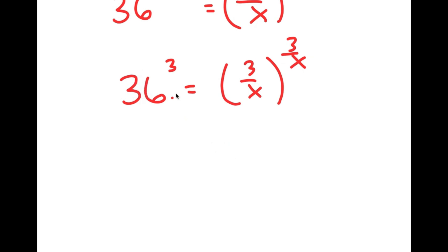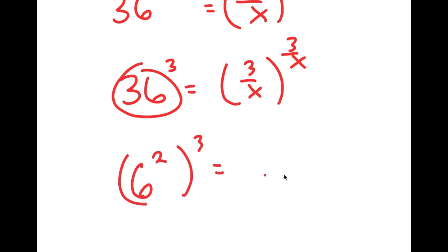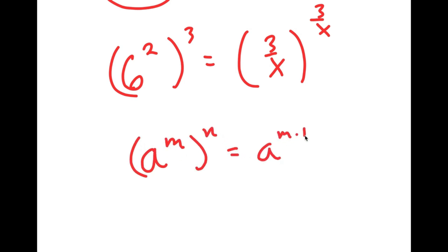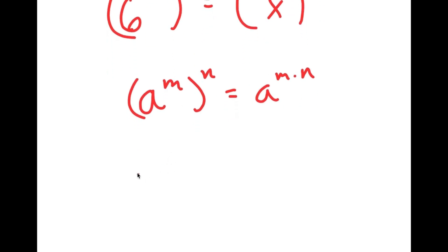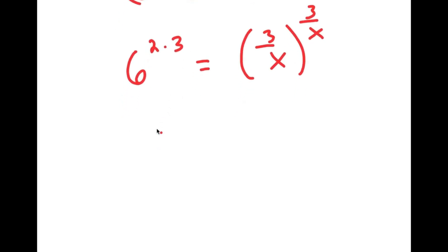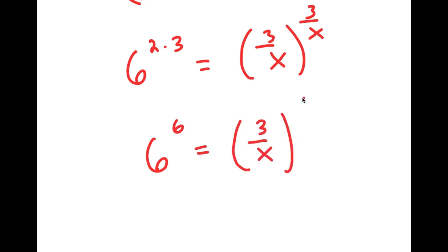From here, I can rewrite 36 as 6 squared. So I get 6 squared to the power of 3 is equal to 3 over x to the power of 3 over x. Using the rule that a to the power of m to the power of n equals a to the power of m times n, I get 6 to the power of 2 times 3. And 2 times 3 is 6, so I get 6 to the power of 6 is equal to 3 over x to the power of 3 over x.